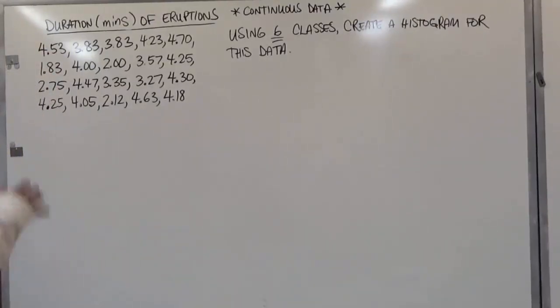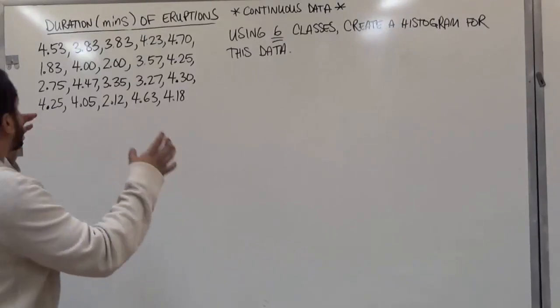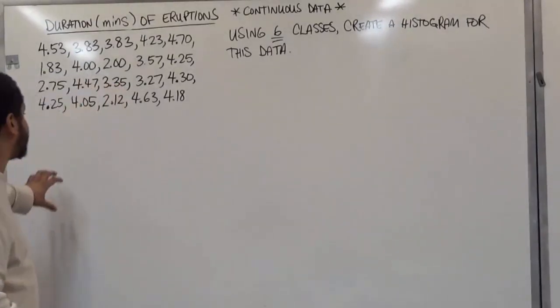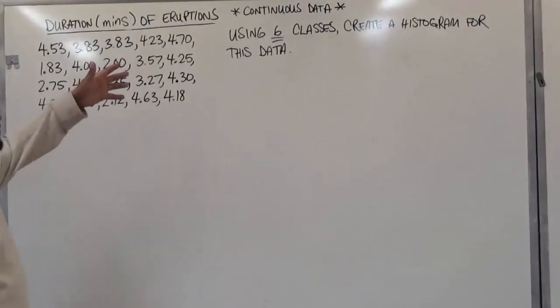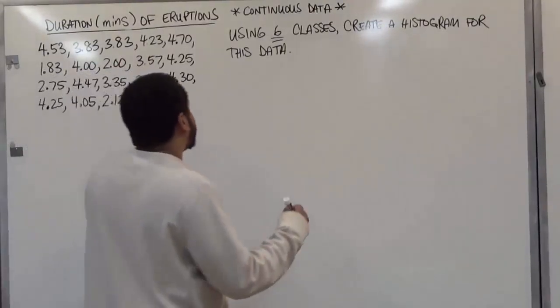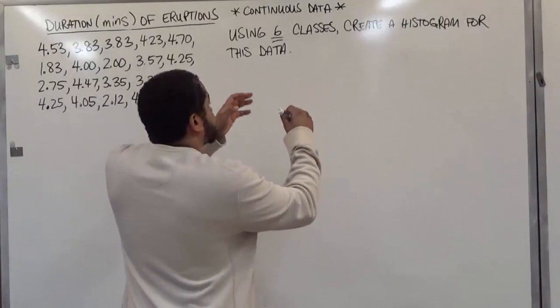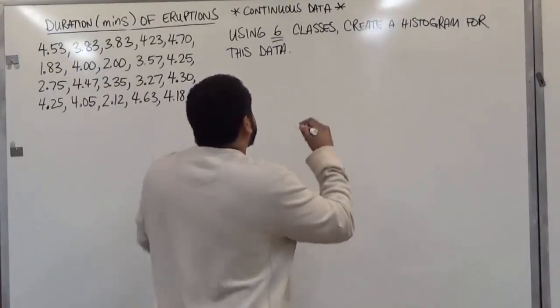So what we're going to do first to do this again is we're going to identify the class width so that we can create our limits for each class. Now since we have six classes, we're going to be dividing our range with six for the class width.